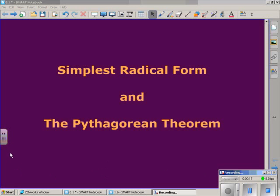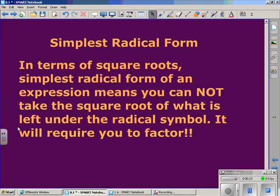Simplest radical form is often involved with problems involving the Pythagorean Theorem because the Pythagorean Theorem would require taking the square roots. In terms of square roots, the simplest radical form of an expression means you cannot take the square root of what is left underneath the radical symbol. This will require you to have a knowledge of some basic math skills such as factoring.